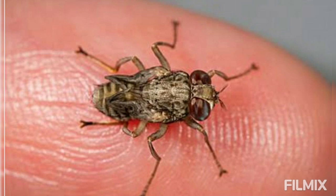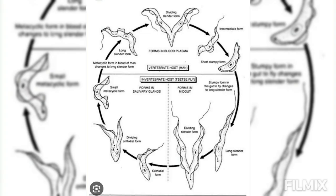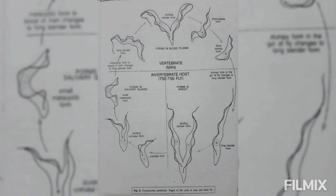The mitochondria develops an extensive network of cristae and the parasite respires more economically as blood glucose gradually declines. The crithidial forms multiply in the lumen of the salivary glands and transform into slender metacyclic forms.